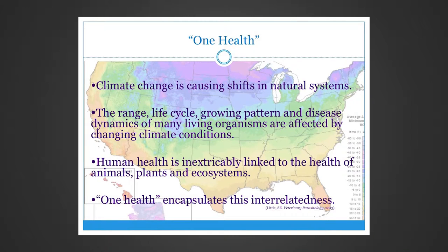Climate change is causing shifts in natural systems. The range, life cycle, growing pattern, and disease dynamics of many living organisms are being affected by the changing climate conditions. Human health is inextricably linked to the health of animals, plants, and ecosystems. The term 'one health' accurately encapsulates this inherent interrelatedness.